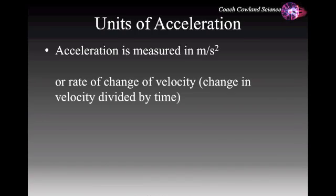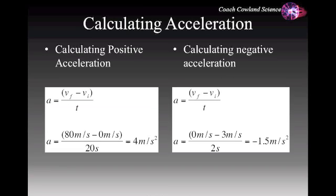Acceleration is measured in meters per second squared. Here's an example of calculating acceleration. In the first example, Vf is 80 meters per second, meaning the vehicle ends at 80 meters per second, begins at 0 meters per second, and takes 20 seconds to get there. 80 minus 0 is 80, divided by the 20 seconds it took to get there, so the acceleration is 4 meters per second squared.